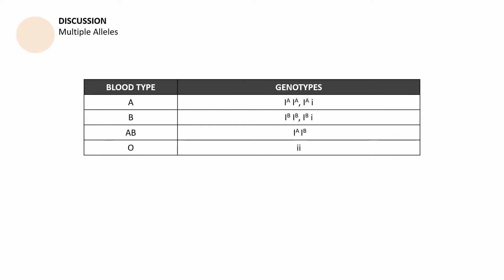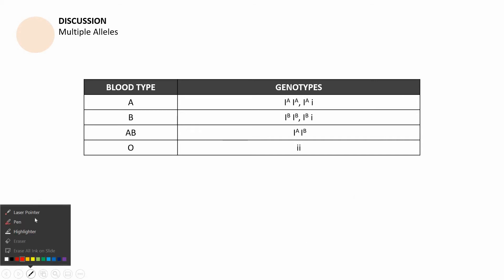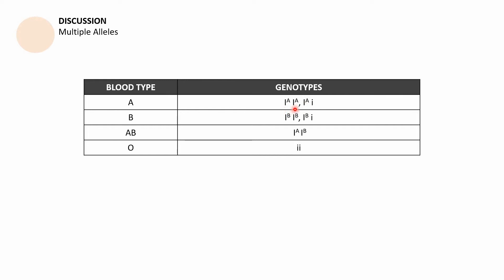For the first part on multiple alleles, let's observe this table. The first column shows blood types A, B, AB, and O. For the genotypes, we have their corresponding alleles. I^A and I^A, as well as I^A with lowercase i, code for blood type A. For B, both homozygous and heterozygous genotypes result in blood type B. For AB, the individual has both antigen A and B. For O, the individual has neither of those two antigens.